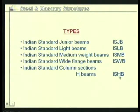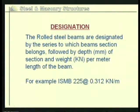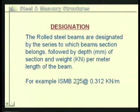To specify a particular I section, we use its designation. The designation is first given by the series to which the I section belongs — whether ISMB, ISJB, ISLB, or ISWB category. Then we specify its depth, followed by the weight of the beam per meter length. So to specify an I section, we give its series, depth, and weight per meter length.